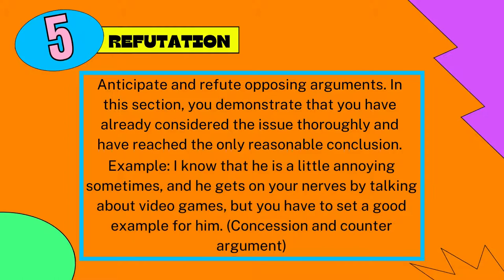The fifth element is refutation. Anticipate and refute opposing arguments. In this section, you demonstrate that you have already considered the issue thoroughly and have reached the only reasonable conclusion. For example: I know that he is a little annoying sometimes and he gets on your nerves by talking about video games, but you have to set a good example for him. This is a concession and counterargument.